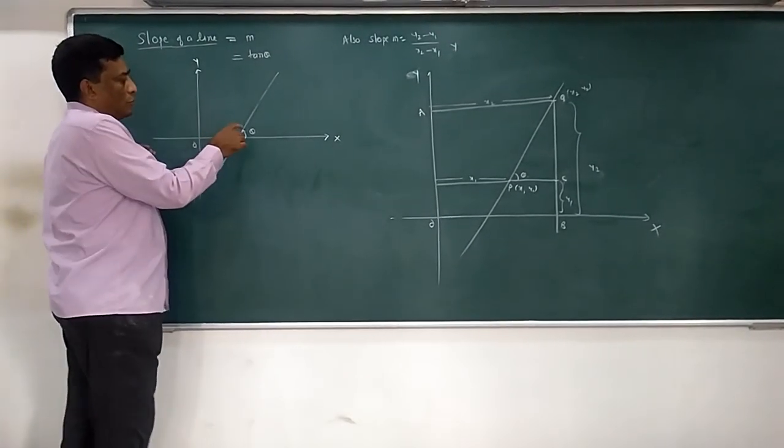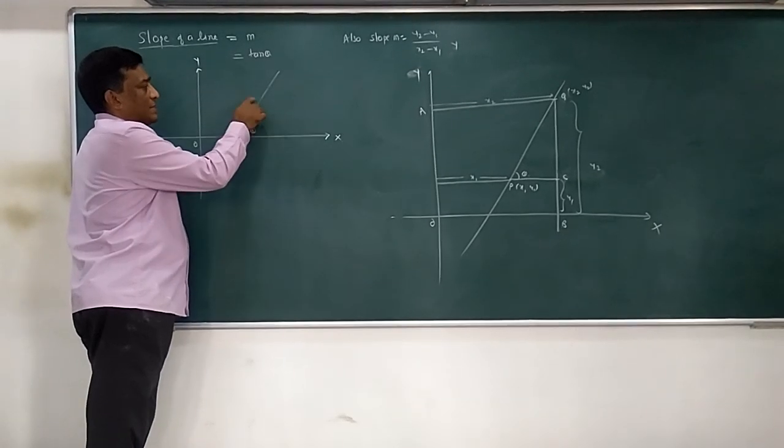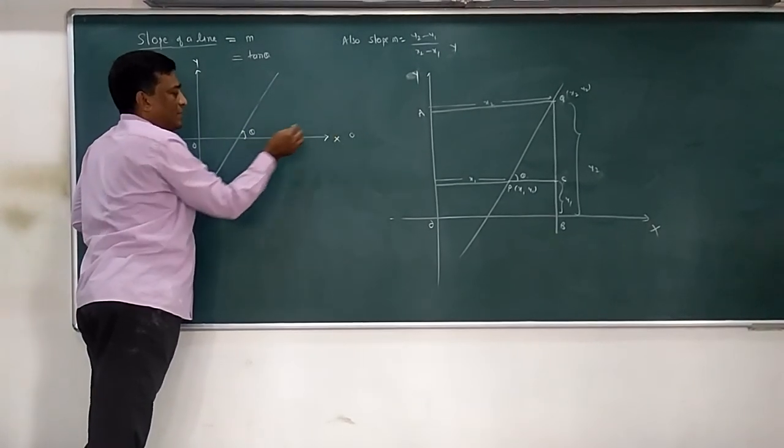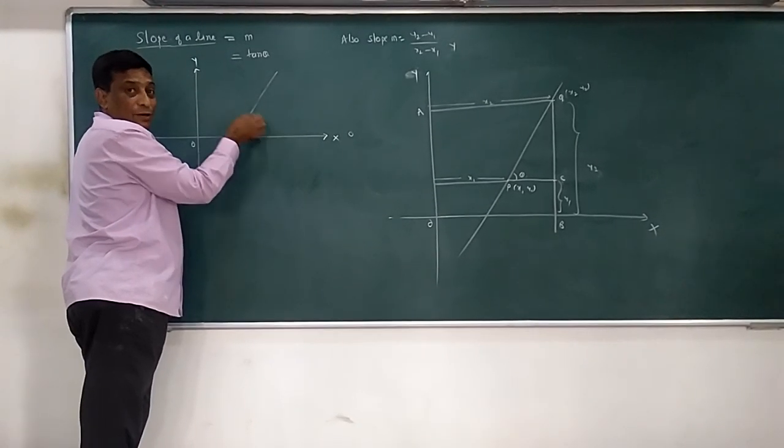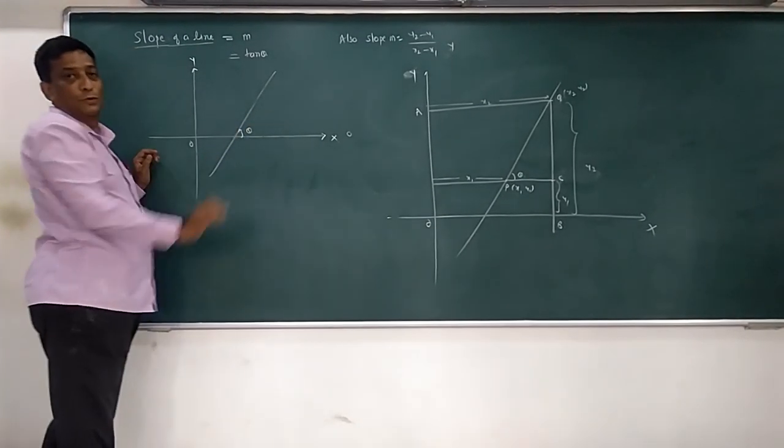Now, what you mean by positive direction of x-axis - this is called zero level. How much angle it makes with the x-axis in anticlockwise direction, that gives you slope.